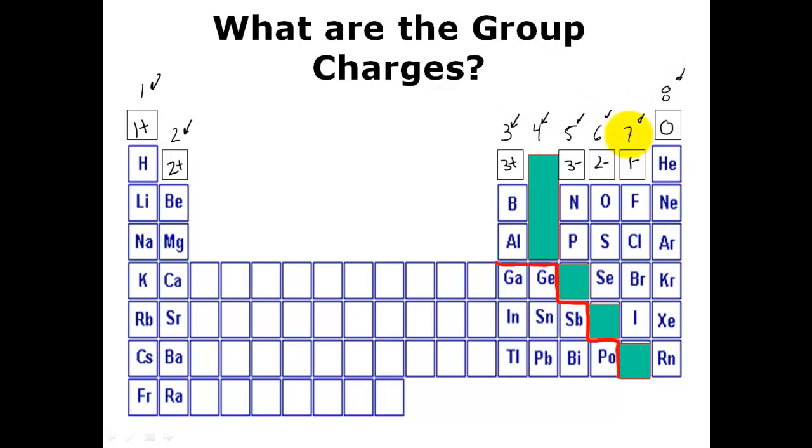And just to clarify, something that has 7 valence electrons will need 1 more electron, therefore it becomes a 1 minus charge. And likewise, something that has 6 outer shell electrons will need 2 more electrons, getting a 2 minus charge. Just so we're clear on that point.